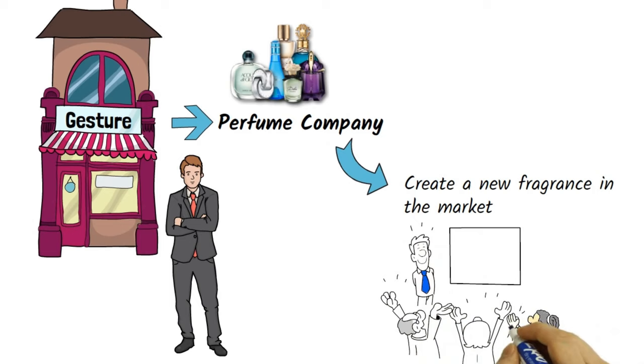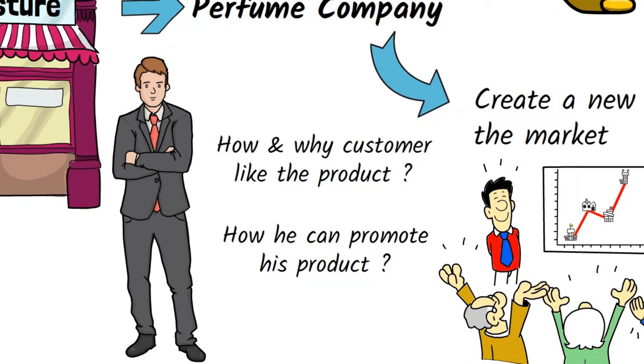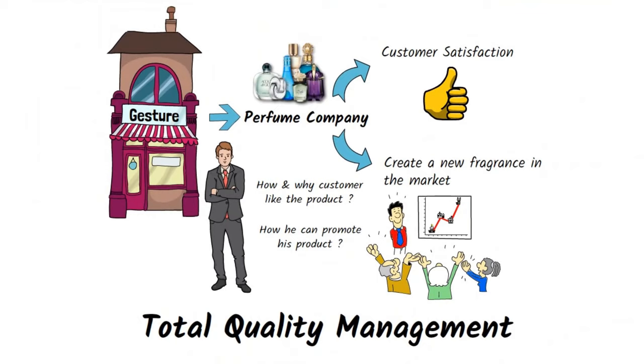But on the other hand, its focus is on customer satisfaction also and most importantly how and why a customer likes the product and how he can promote his product so that he can attract more audience. This all systematic and arranged process known as total quality management, which is followed by John to grow his company.